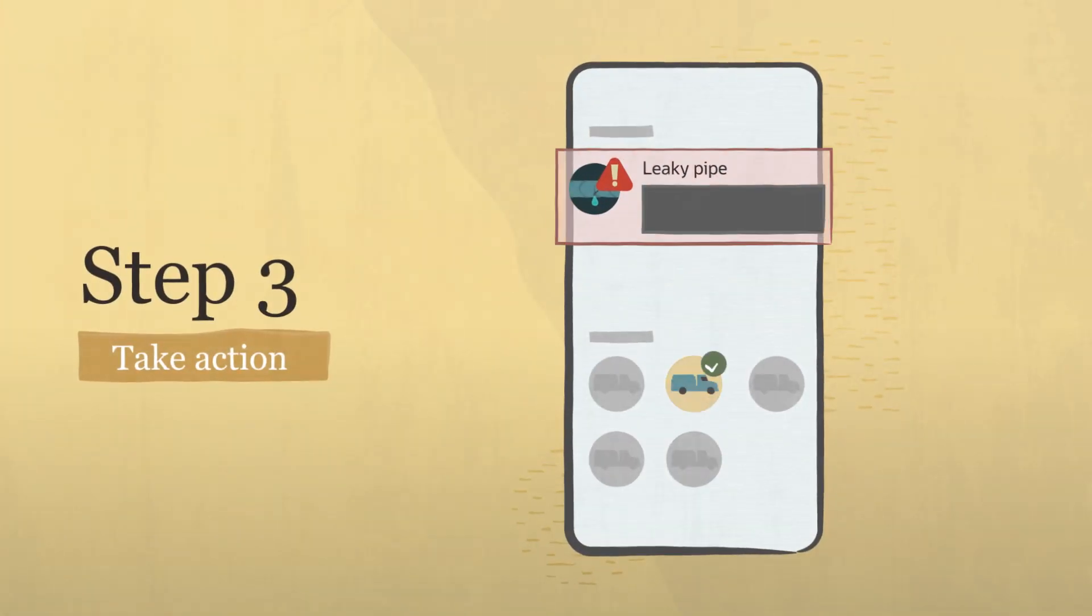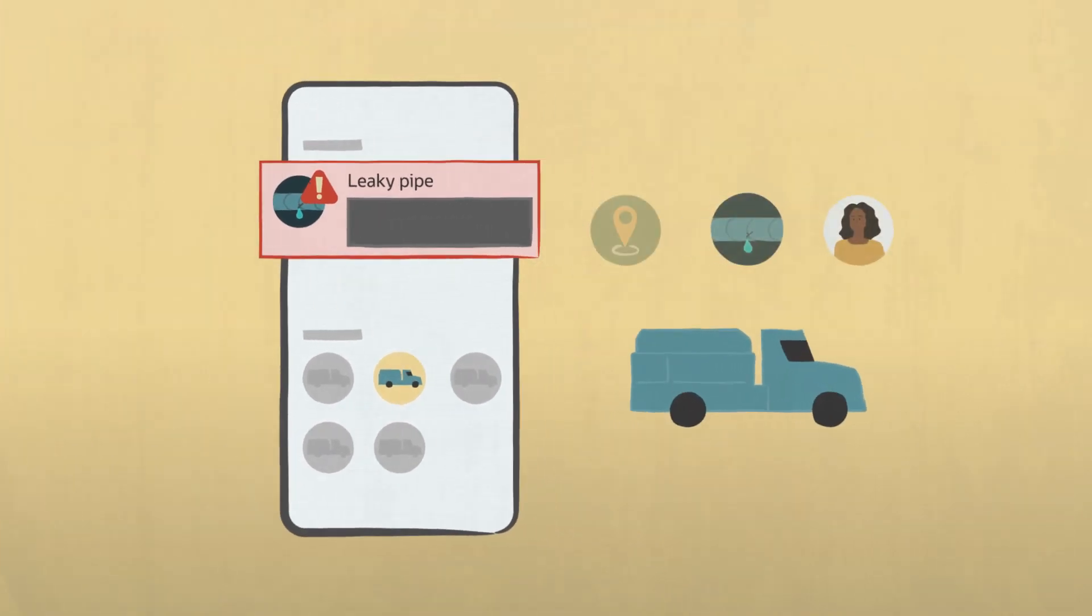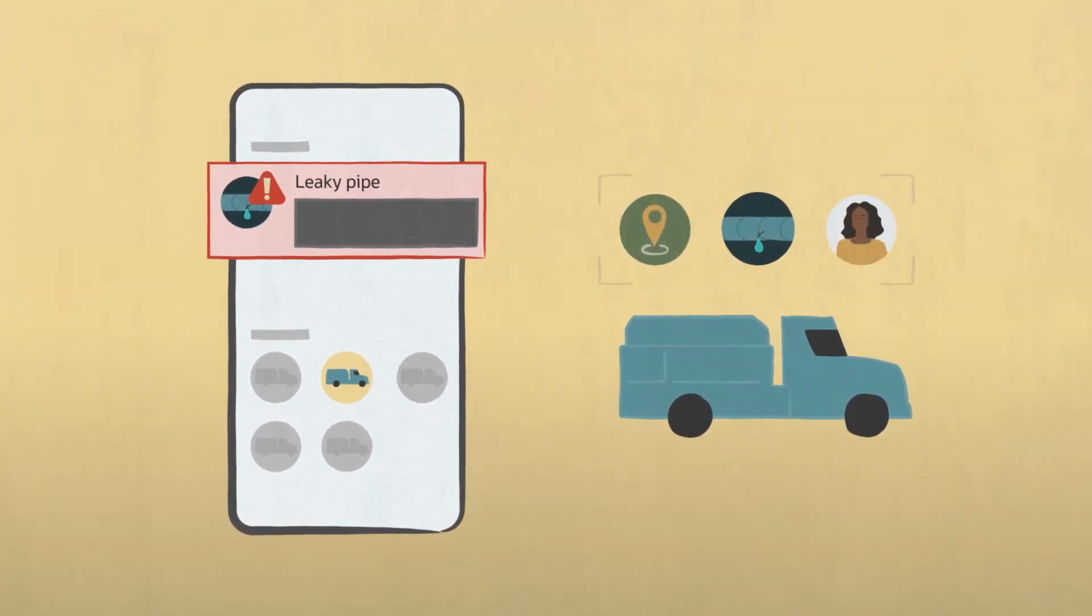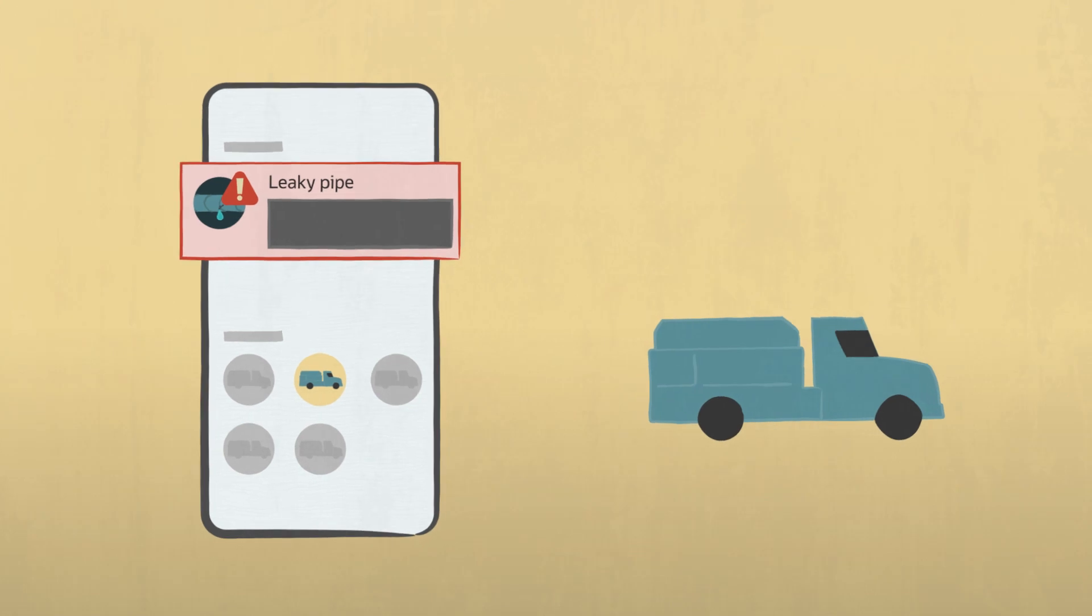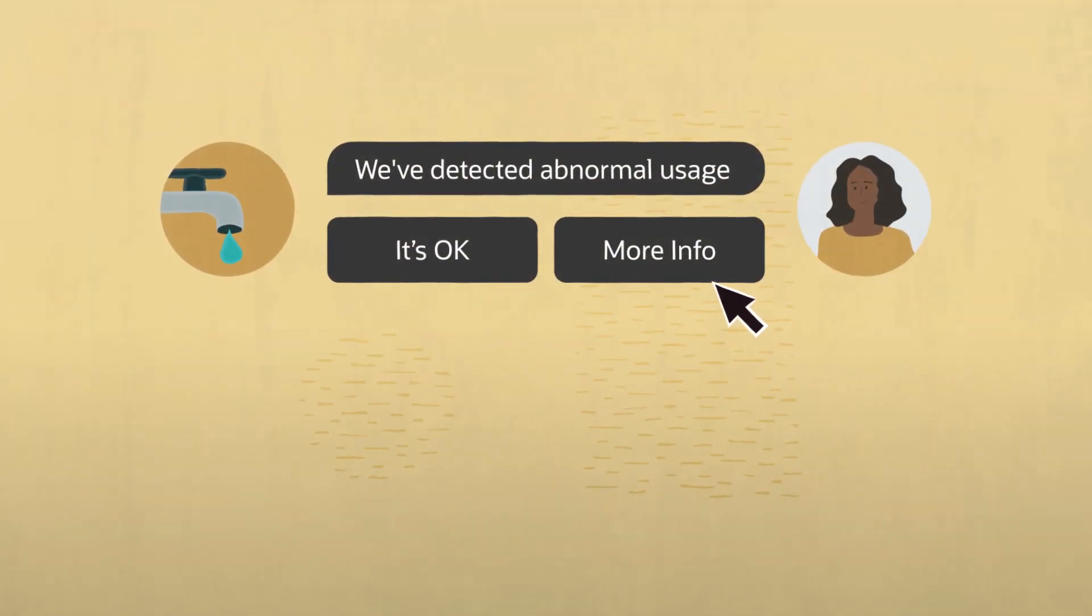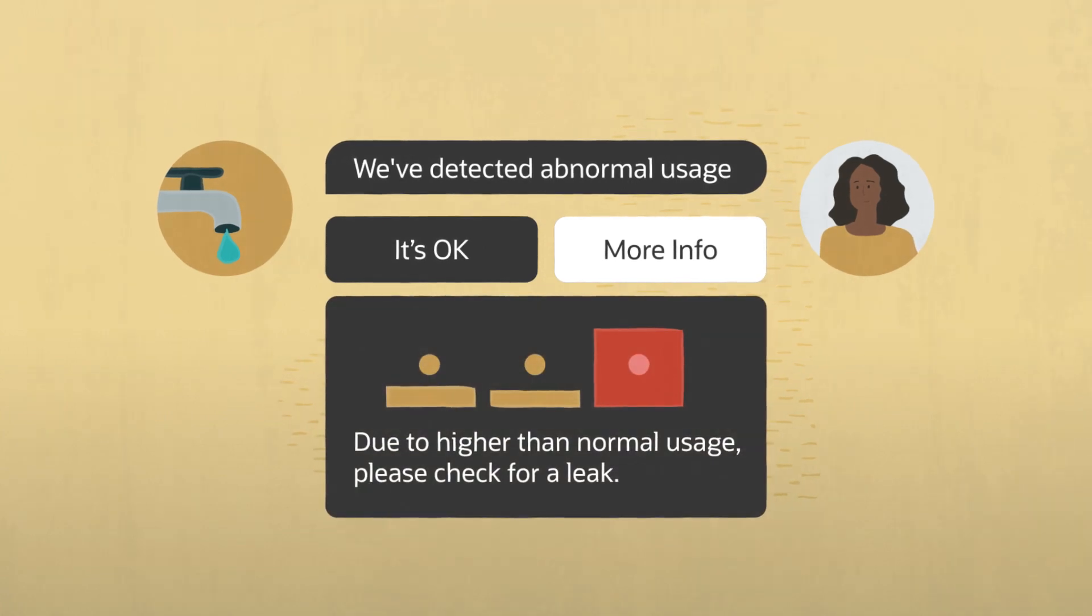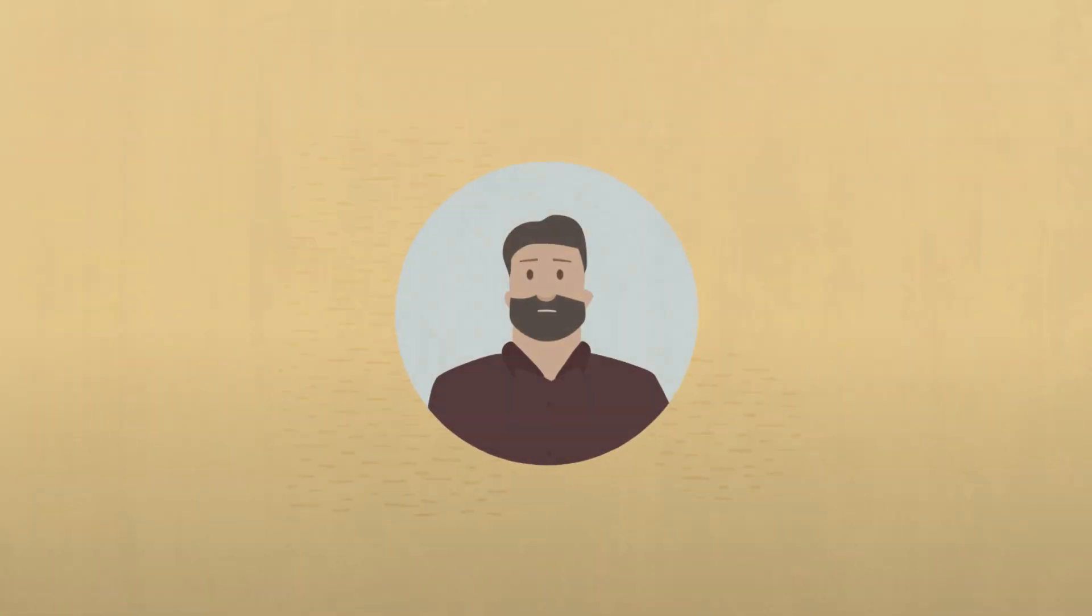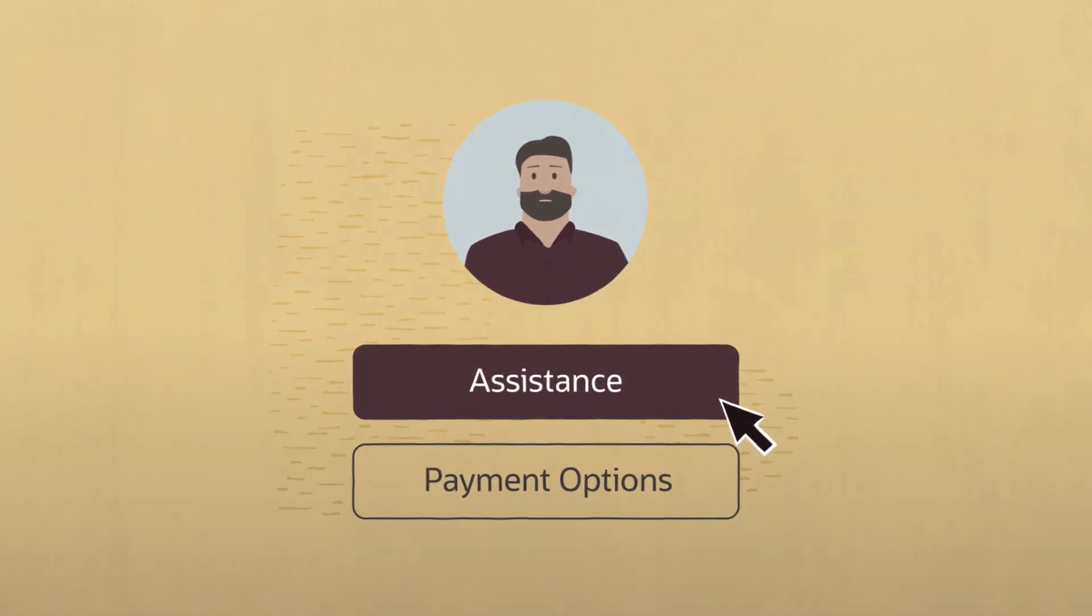Take action. Automate service requests by passing relevant device and premises data to field teams before trucks roll. Proactively notify customers before a high bill leads to a surprise. And for losses due to theft, offer customers the right options, including assistance and payment options.